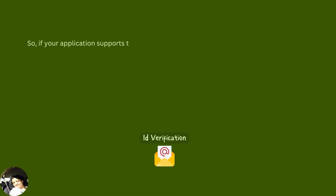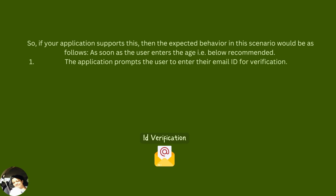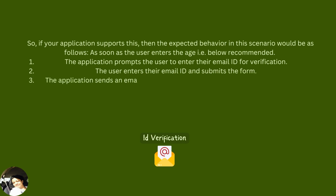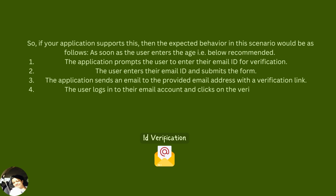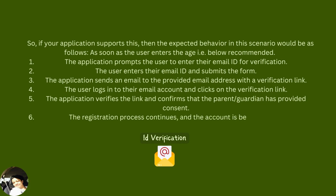If your application supports parental consent, the expected behavior is as follows: first, the application prompts the user to enter their email ID for verification; second, the user enters the email ID and submits the form; third, the application sends a verification email with a link; fourth, the user logs into their email and clicks the link; fifth, the application verifies the link and confirms parental consent; sixth, the registration process continues and the account is created.